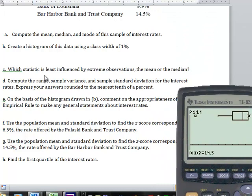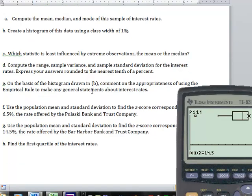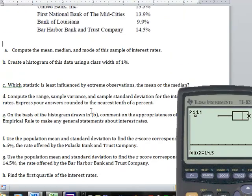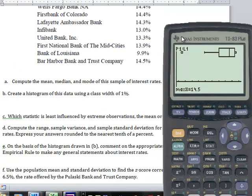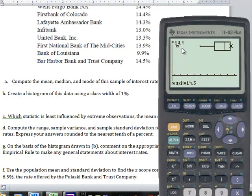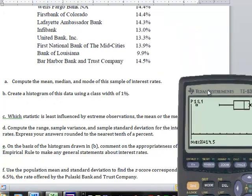Part C: Which statistic is least influenced by extreme observation, the mean or median? The median, right? The median is least influenced by extreme observations. If your data are skewed, like this is skewed, we definitely want to report the median. Now sometimes you'll report the mean and the median, but at the very least report the median. If your data is roughly symmetric, then you can report the mean.